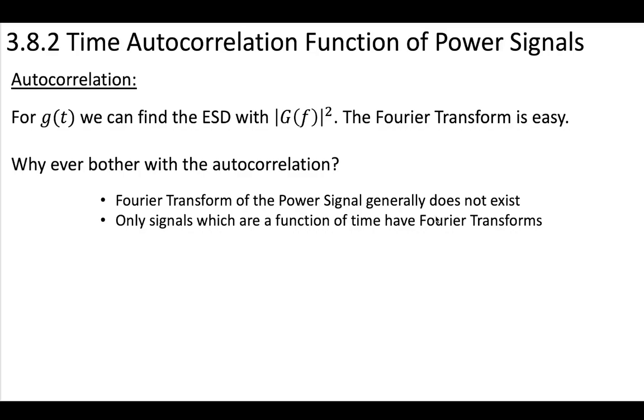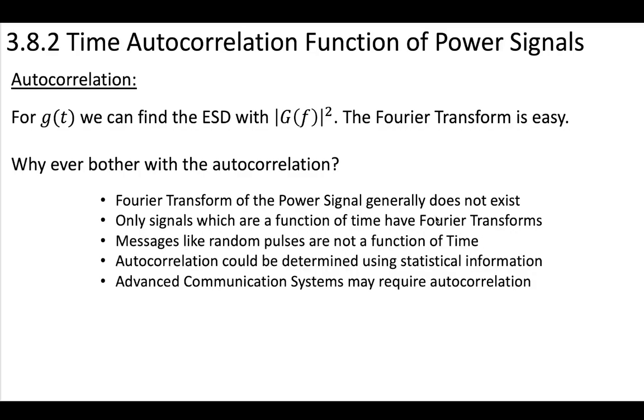So you can't rely on the same method of taking the Fourier transform to get the energy signal density if you're dealing with a power signal. Messages like random pulses are not actually a function of time, and the new information is going to be difficult or impossible to make as a function of time. If you could do that, then it might not be considered new information.